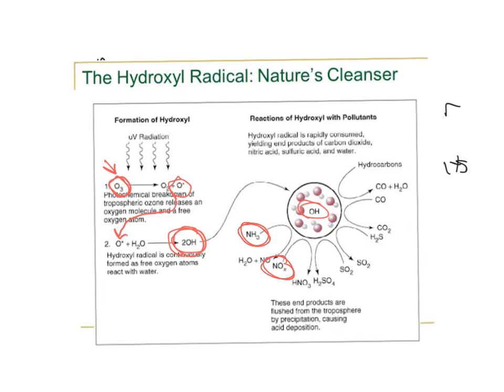Those end products — nitric acid, sulfuric acid, and water — can get flushed from the troposphere by acid precipitation. They essentially become acids that get washed onto the Earth and out of the atmosphere. In that way, hydroxyl radicals are actually washing pollutants out of the atmosphere.